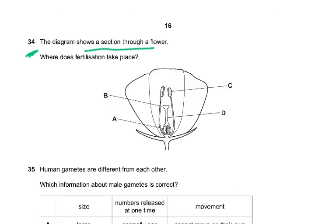Question 34: The diagram shows a section through a flower. Where does fertilization take place? C is the anthers where pollen is produced - pollen is the male gamete. B is the stigma where the pollen from the anthers lands on to the stigma. Then D is the style and A is the ovule. Where does fertilization take place? A - inside the ovule fertilization takes place.